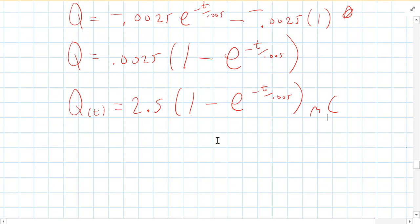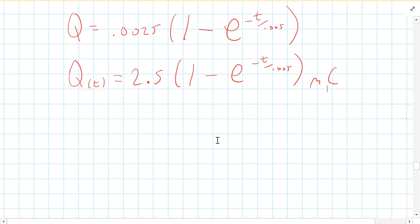The total Q is we're going to plug time approaches infinity. After a long time, how much charge does flow through this? Well, if I plug in E to the negative big number, I get zero. So the total charge that flows through the circuit is simply 2.5 times 1 minus 0, or 2.5 millicoulombs.